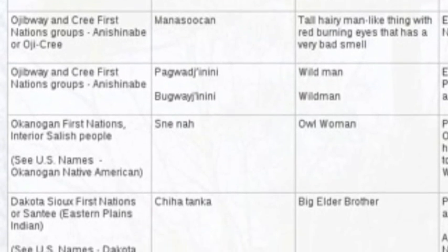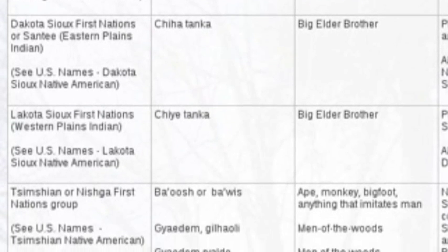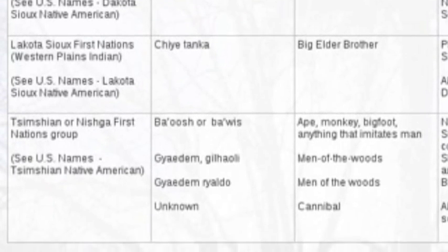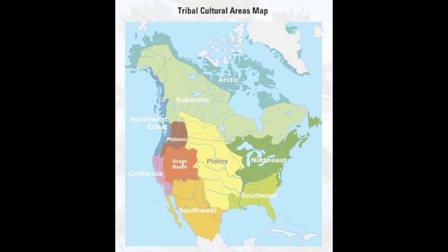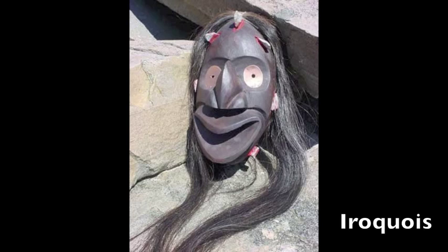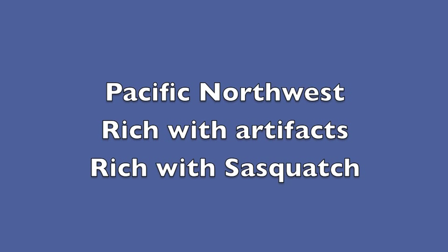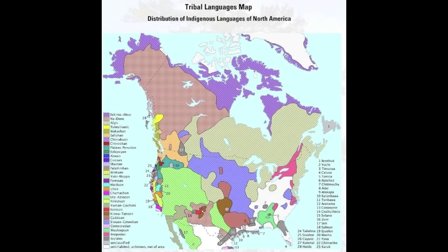Eskimos have 12 words for snow describing each state of snow. Some of these groups have up to eight or nine words to describe the same being. You don't just have all these different names unless you actually have different states and different things you see. With red burning eyes, very bad smell. Big elder brother. Ape, monkey, Bigfoot — mask being in tribal ceremony. You can see that a number of different groups live in the Pacific Northwest because the climate is rather mild.